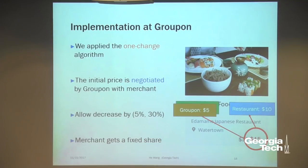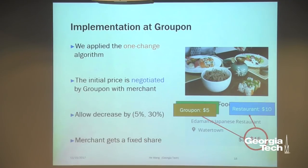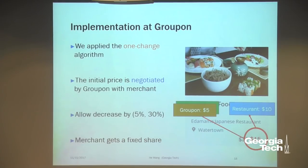In response to a question about showing different prices to different customers: we cannot do that. The constraint is that we show the same price to all customers simultaneously. If we could show different prices, that would help us learn faster, but customers may become strategic and exploit this. Technically it's possible, but the company doesn't want to do it. When we analyze regret in our theorem, we assume a fixed demand function and analyze the algorithm's convergence to optimal — this is something we can only verify in theory. In practice, we want to test it empirically.